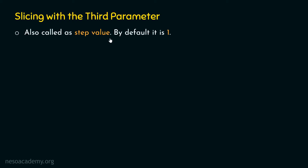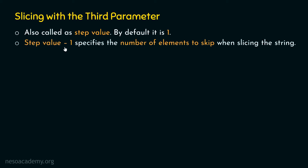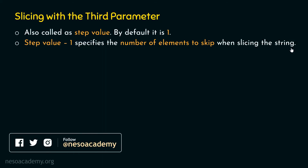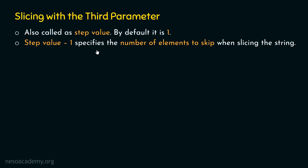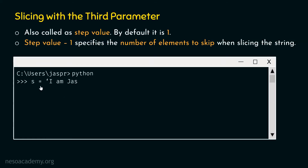Now we need to understand the meaning of the step value. Step value minus 1 specifies the number of elements to skip when slicing the string. If we are interested in providing the step value, we first need to subtract the step value by 1, and then it tells the number of elements to skip when slicing the string. In order to understand this concept better, we need to consider one simple example. We will go to our command prompt and take the same string: s equal to 'I am just Preet'.